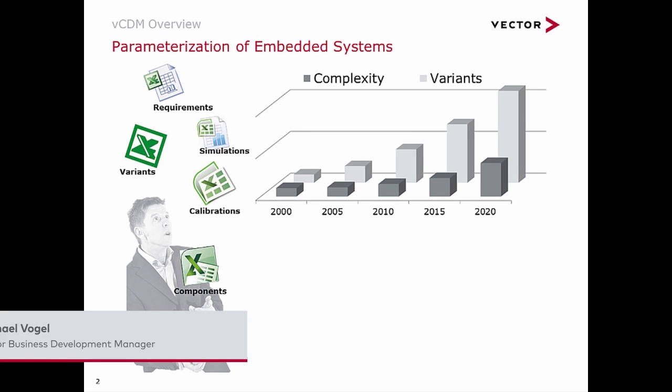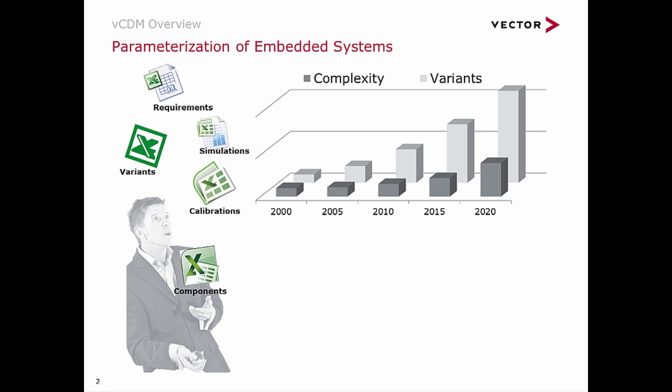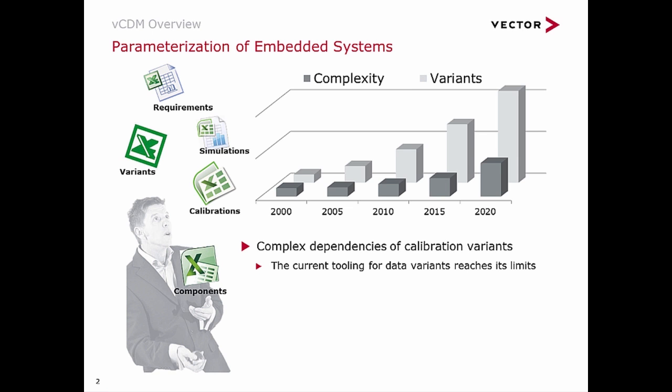Across all domains, electronic control units have reached significant complexity. A diesel engine control unit has easily more than 60,000 parameters. Other controllers may have less parameters but are deployed in hundreds of variants, for instance a parking system. Managing these variants requires understanding the dependencies of configuration and calibration parameters.